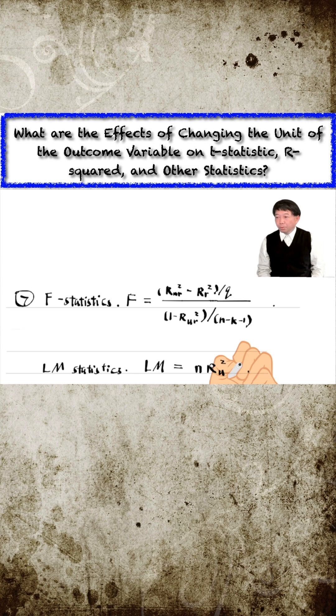However, the r-squared from the auxiliary regression will not change when we use the residuals as the outcome variable, leaving the l-m statistic unchanged.